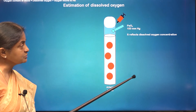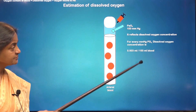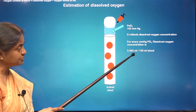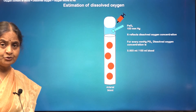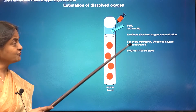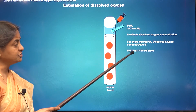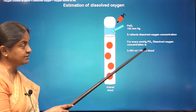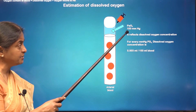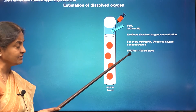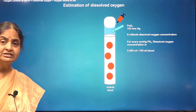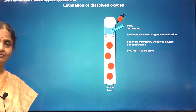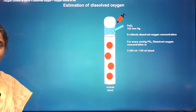You can multiply the partial pressure by a constant 0.003 to get how much oxygen is dissolved in 100 ml of blood. For example, 100 mmHg into this constant gives us 0.3 ml of oxygen dissolved in 100 ml of arterial blood.